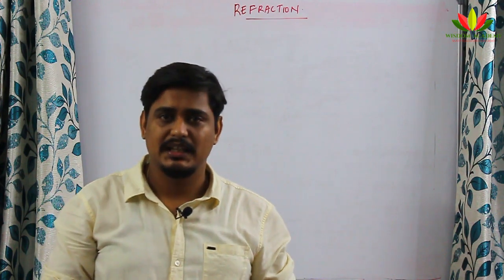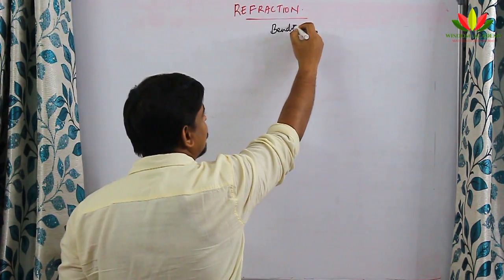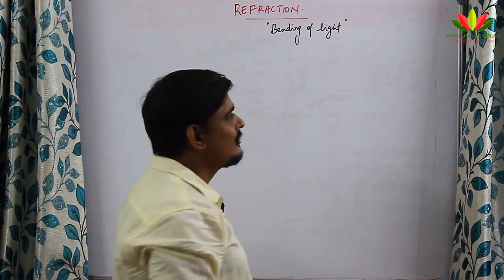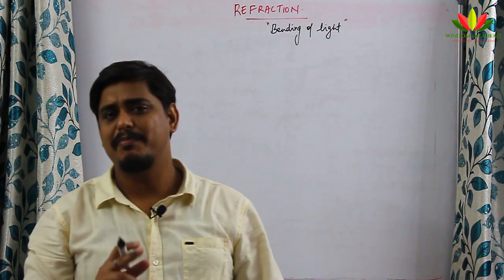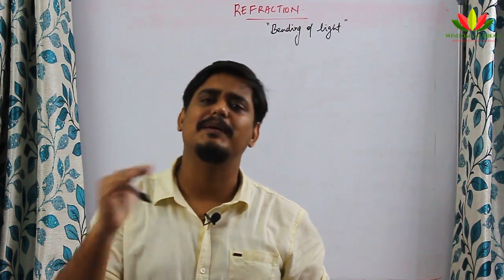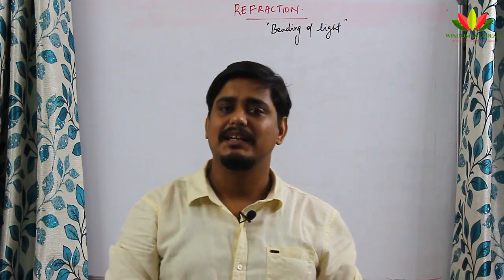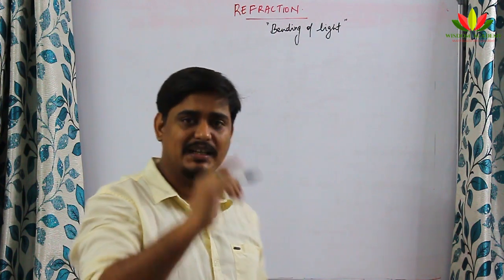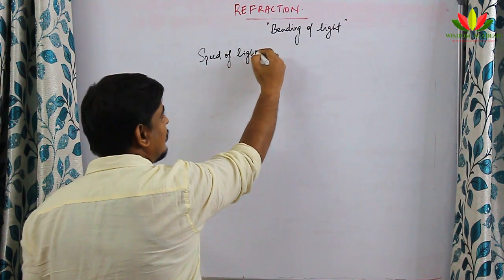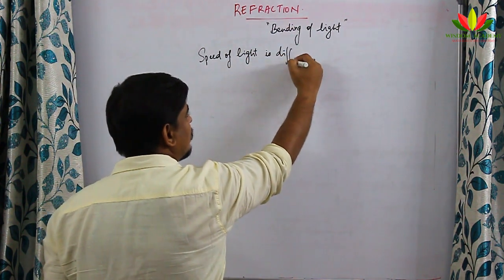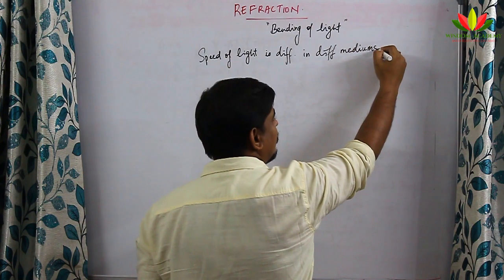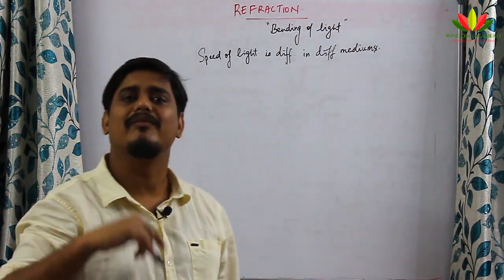Refraction means bending, so bending of light is known as refraction of light. When light enters from one medium to another medium, the speed of light is different in different mediums, and that is the reason it bends when going from one medium to another.